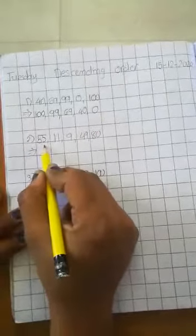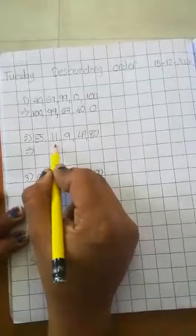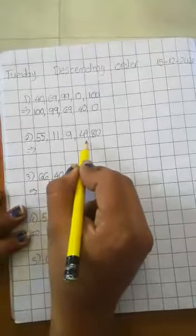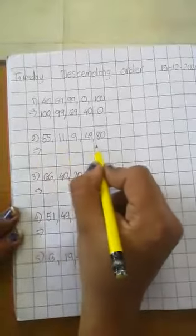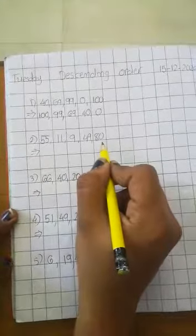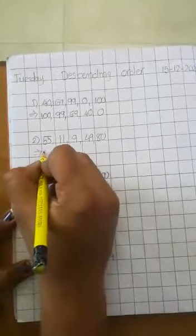Next, 55, 11, 9, 49, 80. Which number is big? 80. Write first 80.